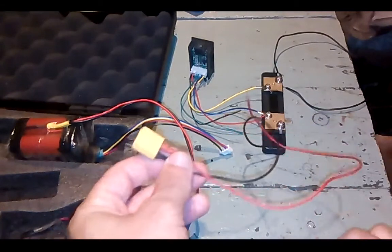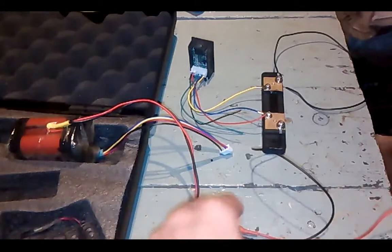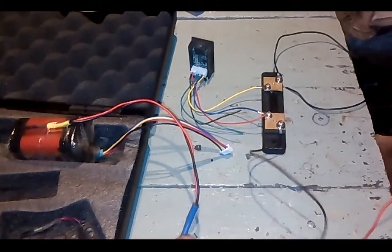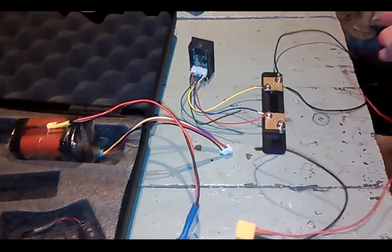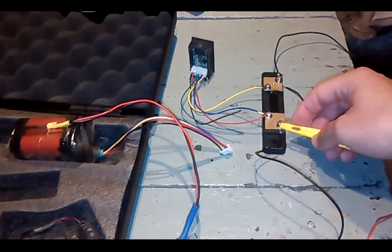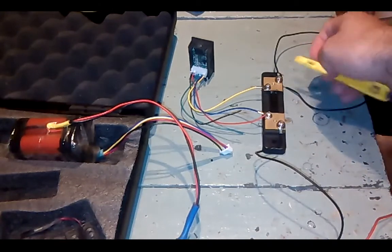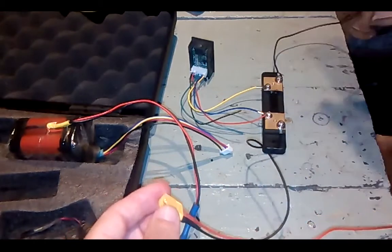So these are power leads coming from the battery. Positive - this will go, positive will go straight to your load. And negative will go into the shunt and then be split and come out on the other side. So as you see, that's the negative.